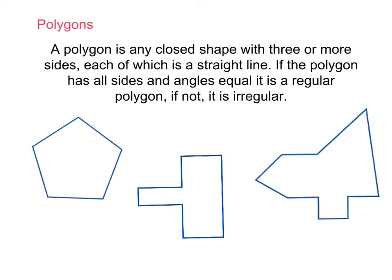It says: A polygon is any closed shape with three or more sides, each of which is a straight line. If the polygon has all sides and angles equal, it is a regular polygon. If not, it is irregular.